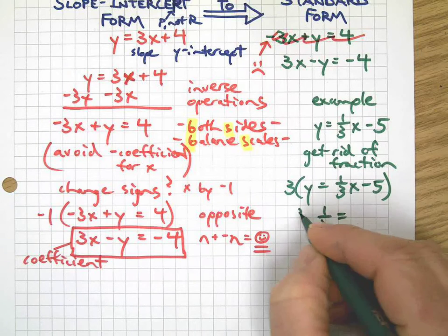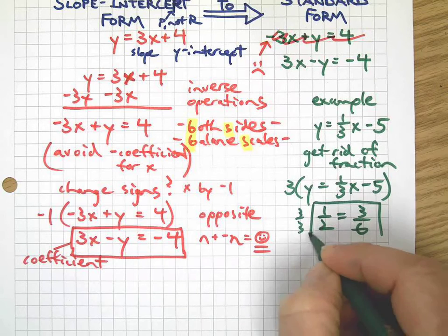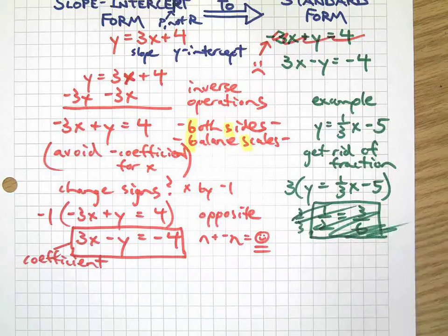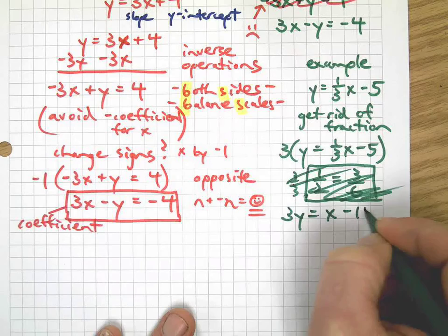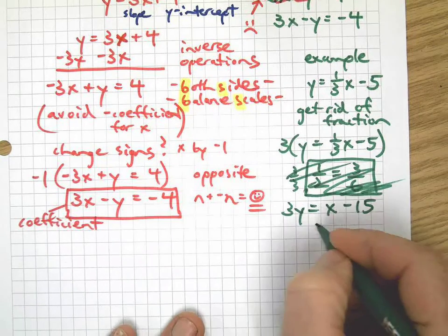It's like equivalent fractions. If I take that and multiply it top and bottom by 3, multiplying everything by 3, I get 3, 6. I end up with two things that may look different, but they're equivalent. Okay, enough of that. So 3y equals x minus 15.